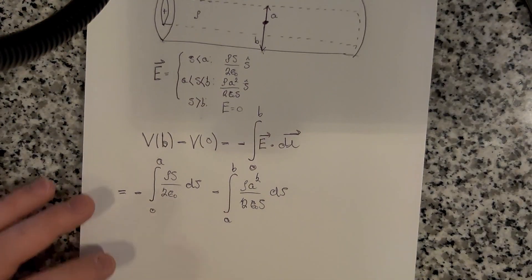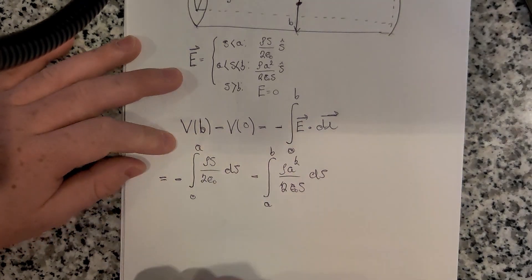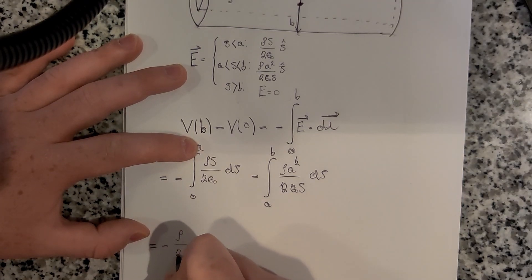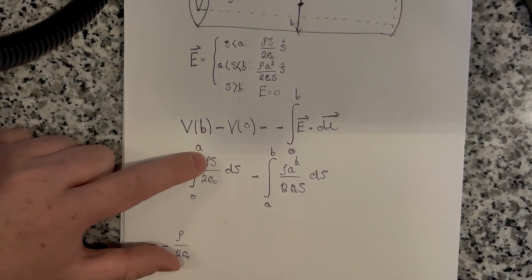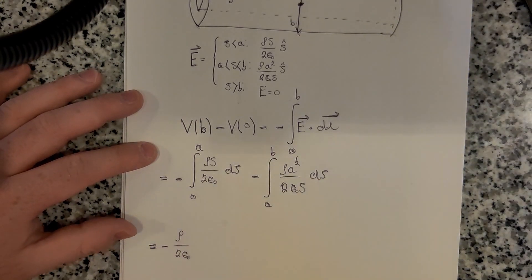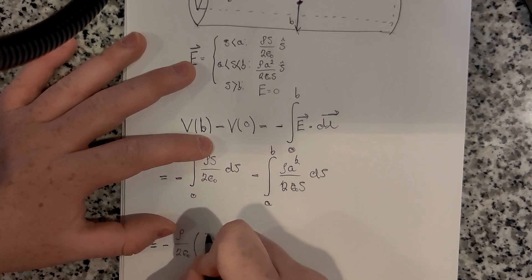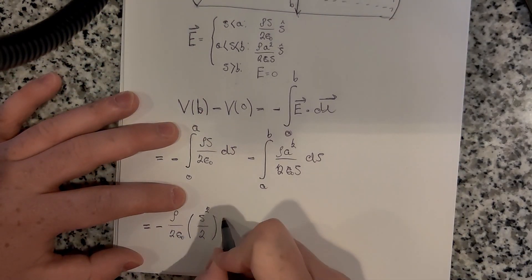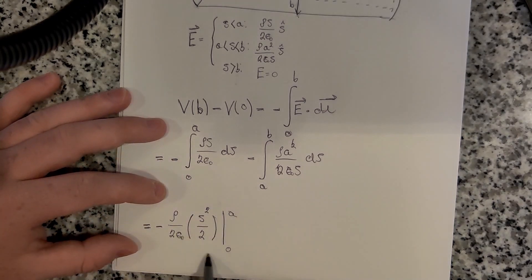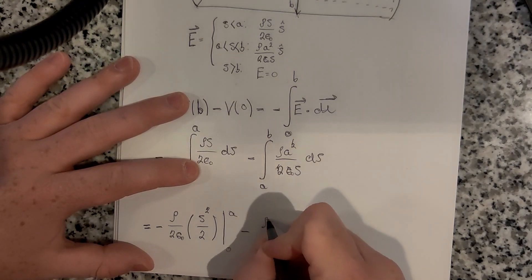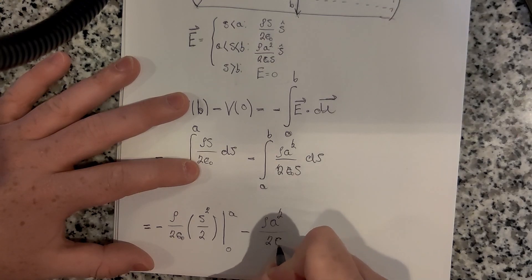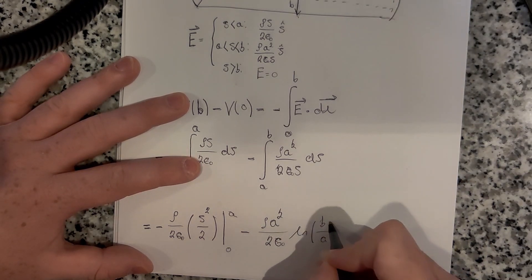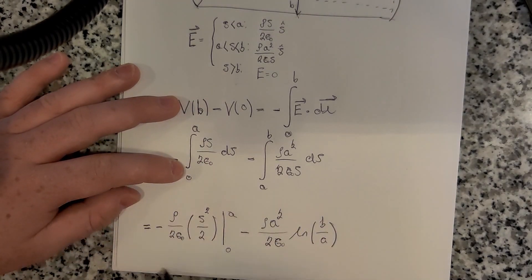Let's do this first integral. So we have the minus sign, we have rho, I'm going to pull out all the constants, and then we have the integral of S dS, which becomes S squared over 2. So we have S squared over 2 evaluated from zero to A. Then we have minus rho A squared over 2 epsilon naught. Then we have the integral of one over S dS, which is just the natural log, evaluated from A to B. I already evaluated these bounds.